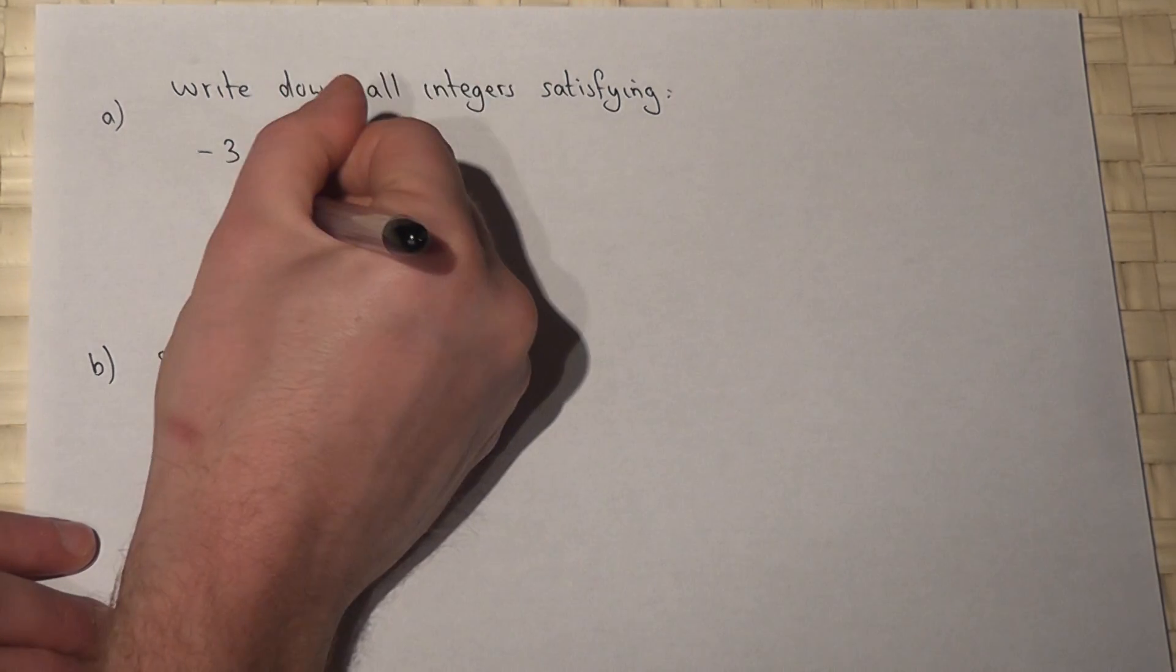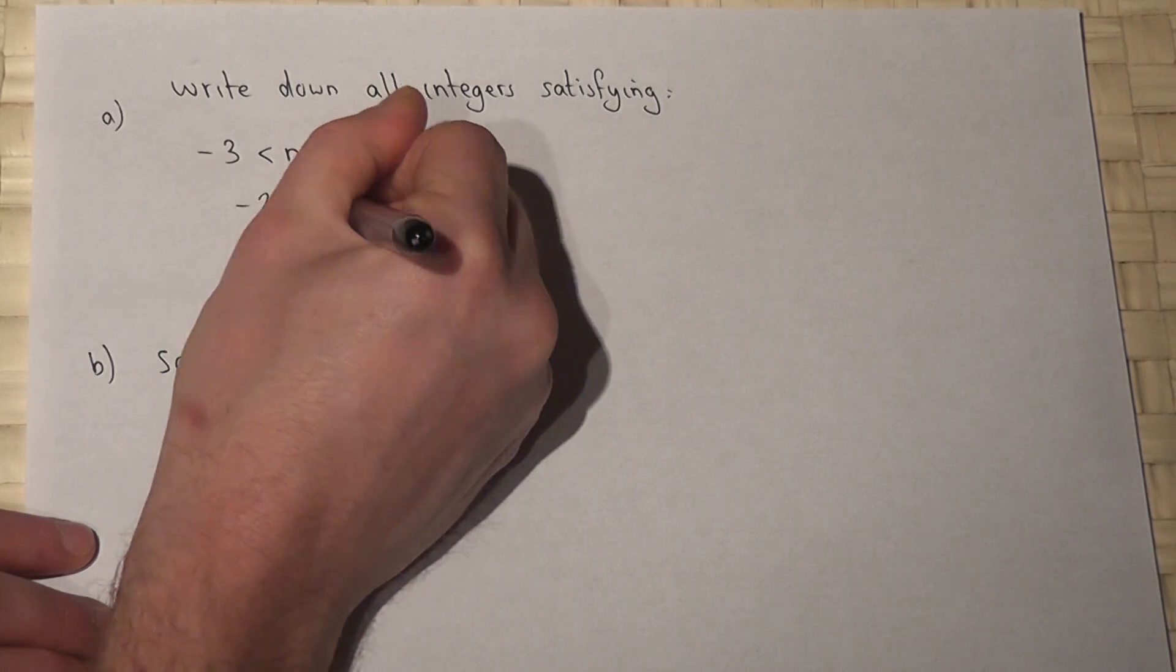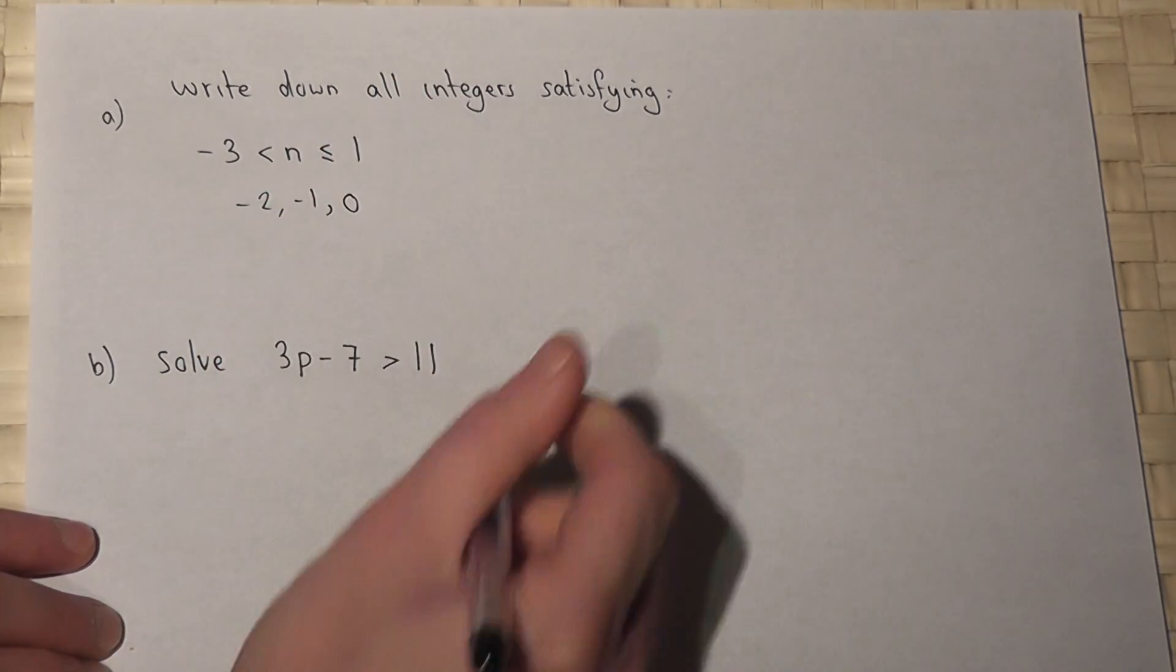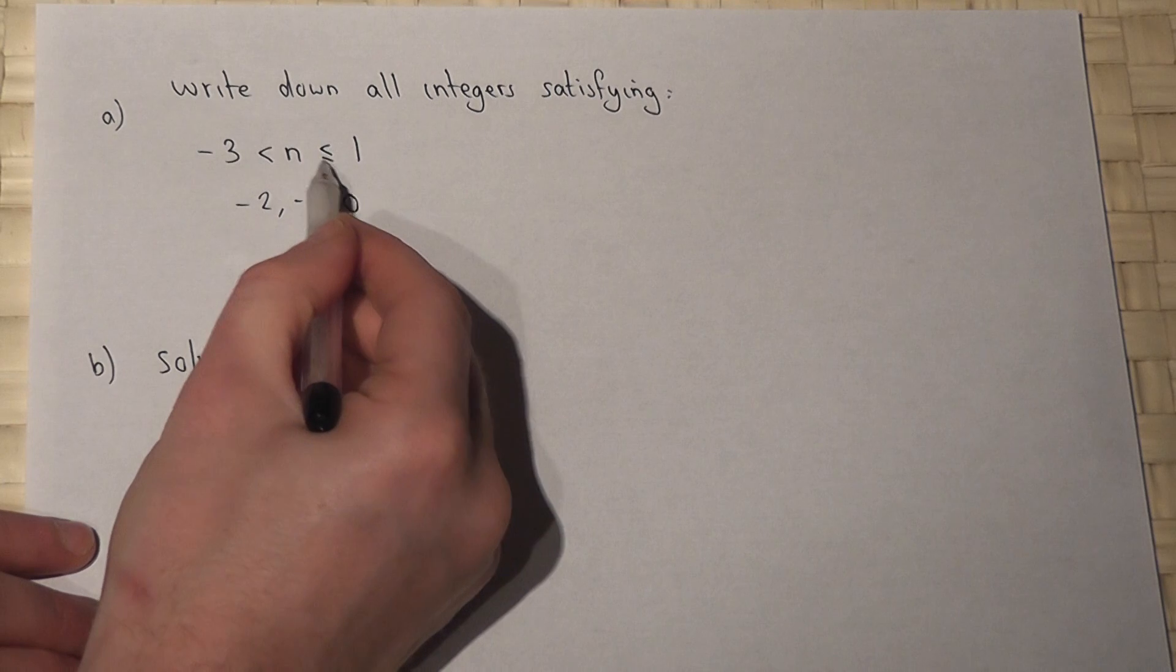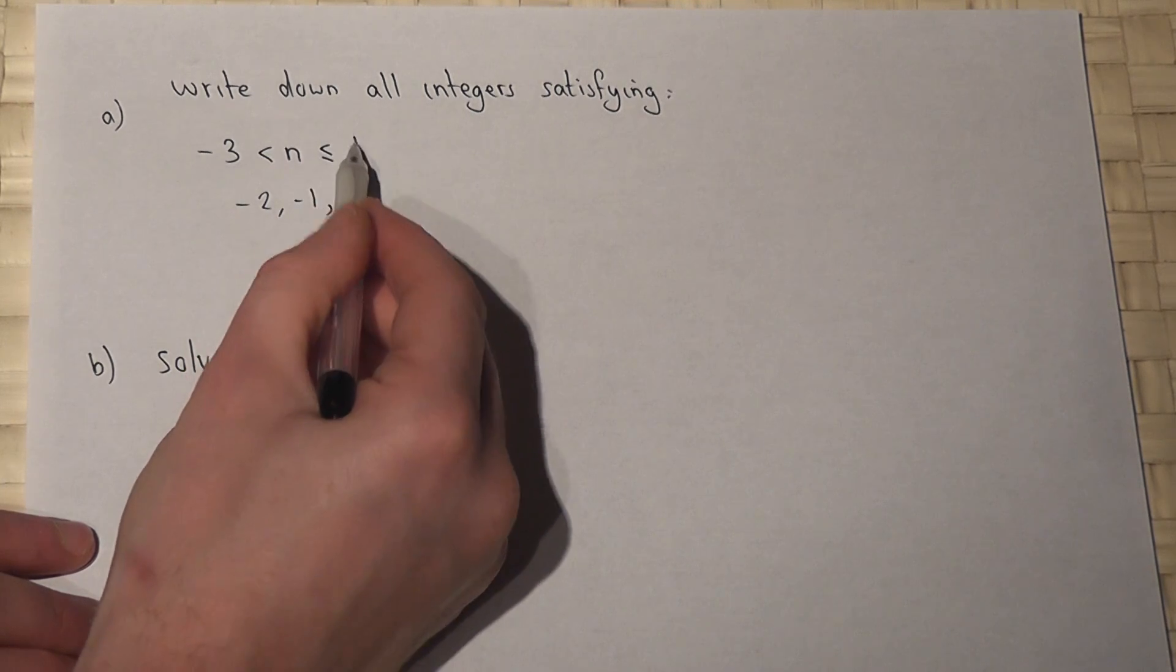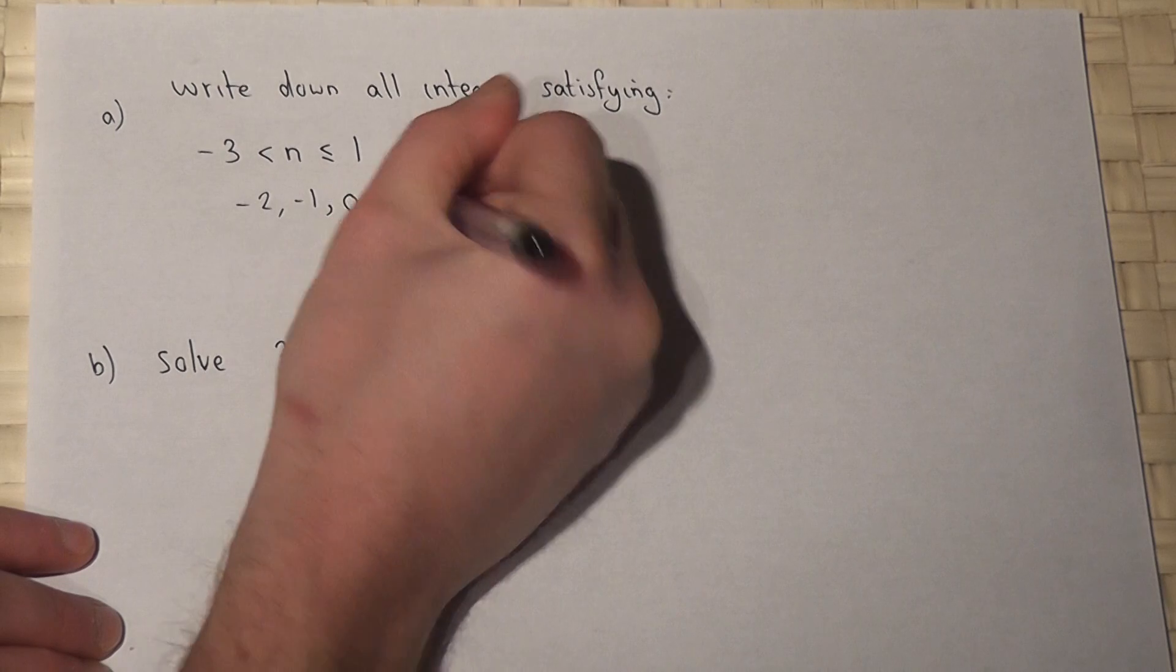So we can start at minus 2, then go to minus 1, then go to 0. But it's less than but also including 1, so we stop at 1.